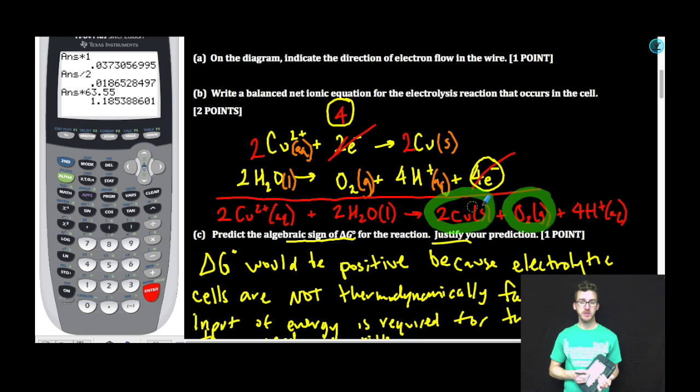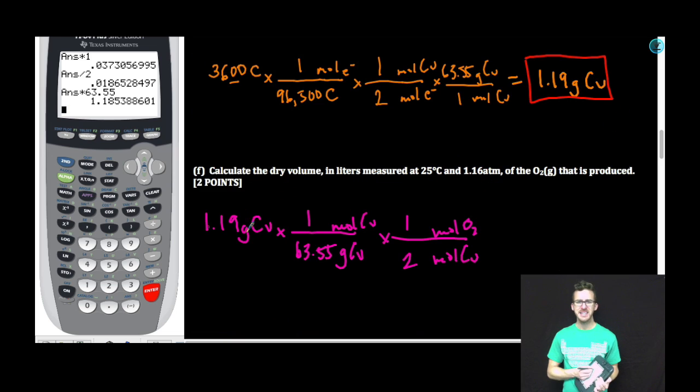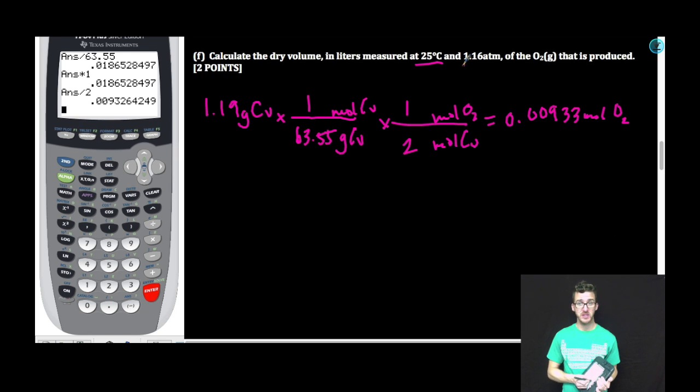This relationship is given to us in our balanced chemical equation that we've written originally in Part B. That relationship is a two to one relationship. Again, if you aren't able to come up with a balanced chemical equation, at least reference the equation that you've written. So don't get caught up on the fact that you've made a mistake early in the problem. Just show me your mad chem skills. Calculator this up. That gives me 0.00933 moles of oxygen gas. 25 degrees Celsius and 1.16 atmospheres is not standard temperature and pressure. So I'm using, you guessed it, PV = nRT.